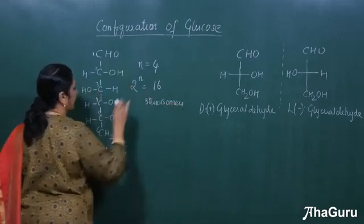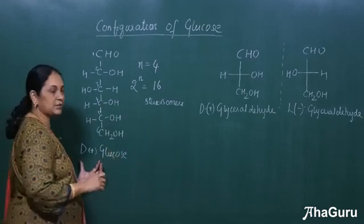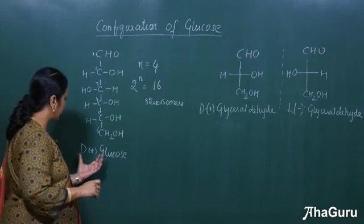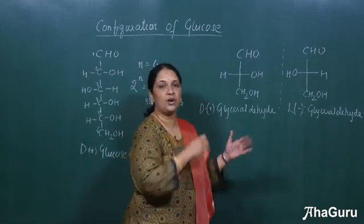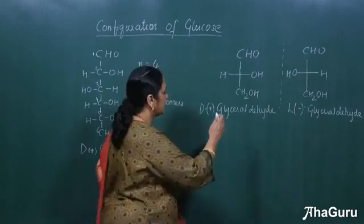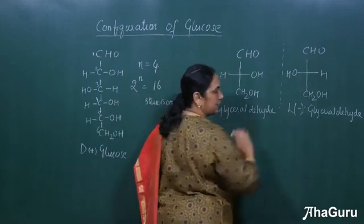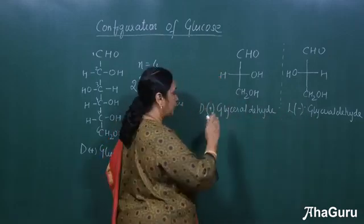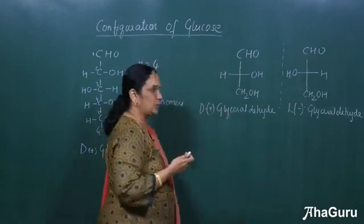From glucose we can write 16 stereoisomers. Now coming back to the structure, why do we write D glucose? That's because we considered the structure with respect to glyceraldehyde, or we compared the structure with glyceraldehyde. So glyceraldehyde has this structure. This is D glyceraldehyde. This is the L glyceraldehyde. This positive and negative means the optical rotation whether it is dextrorotatory or levorotatory.